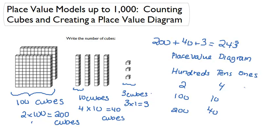For our ones, we had 3. Each of the cubes are worth 1. So 3 times 1 is 3. Again, to get the total, we would just add up all the things in the very last column. So 200, 40, and 3, giving us 243.